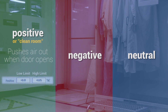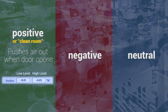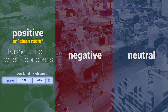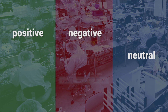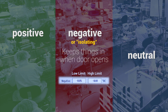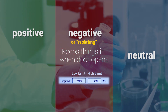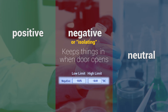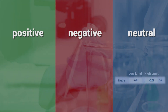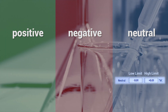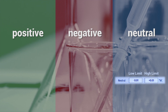A positive room will have an alarm set point slightly above zero differential pressure to some greater positive pressure. A negative pressure room will have alarm set points from less than zero differential pressure to a deeper negative pressure. A neutral room will have the high alarm set point in the positive pressure range and the low alarm set point will be a negative number.